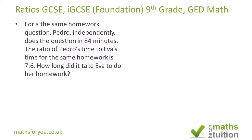I've had to rephrase the question a bit to make it clearer. For the same homework question, Pedro on his own does the question in 84 minutes. The ratio of Pedro's time to Eva's time for the same homework is seven to six. How long did it take Eva to do her homework?